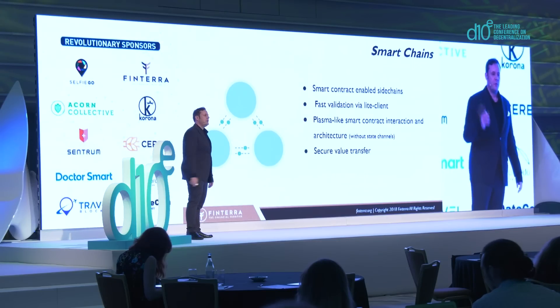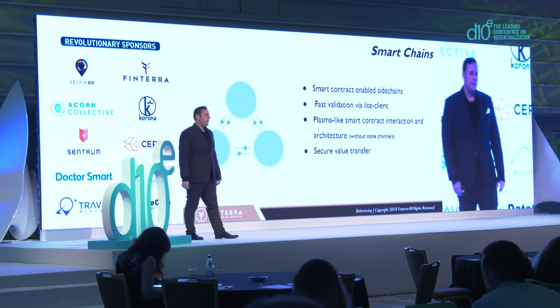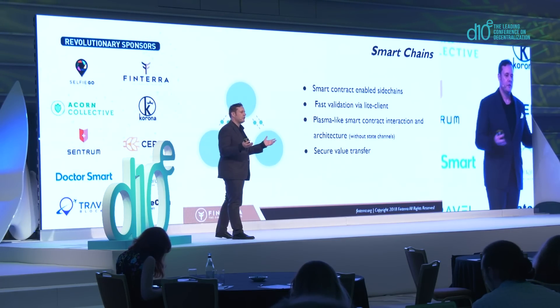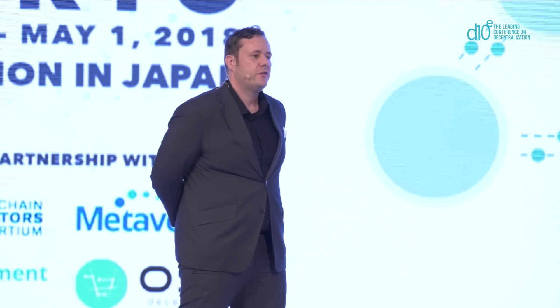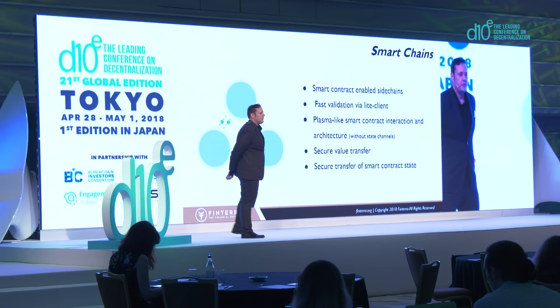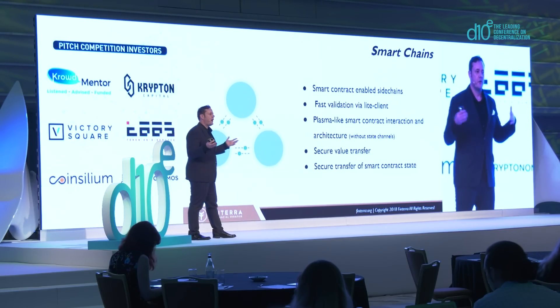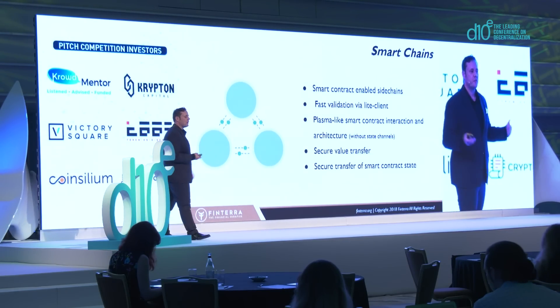We exclude state channels and just use the basic mechanism of using smart contracts to communicate between blockchains. So what can we do with this? We can cryptographically securely transfer value between two chains — in terms of tokens, network tokens, and other tokens. And more importantly, we can securely transfer smart contract state, which allows us to do inter-chain or cross-chain smart contracting.